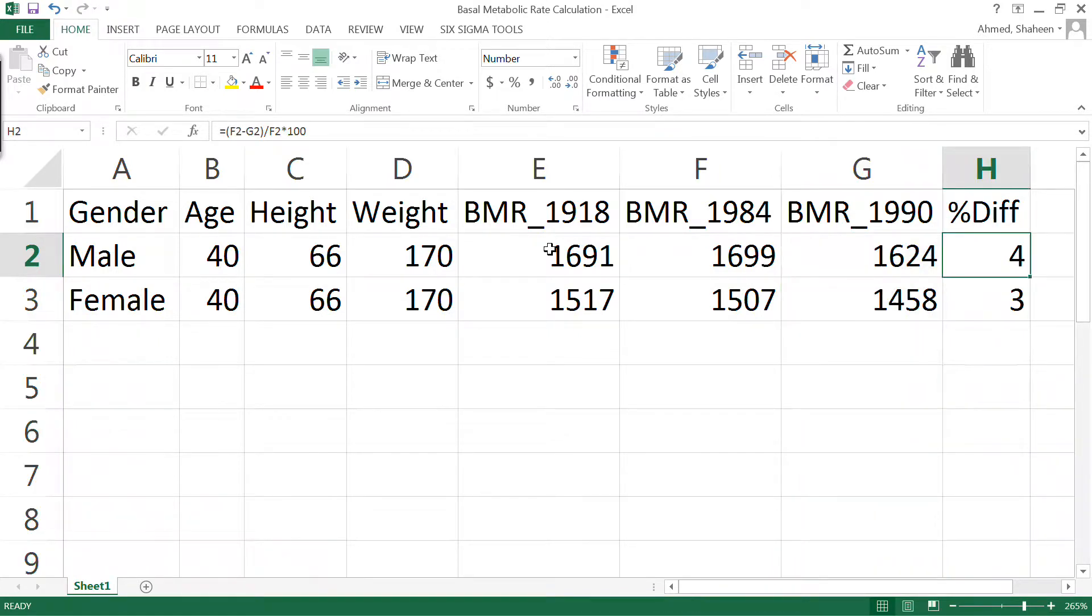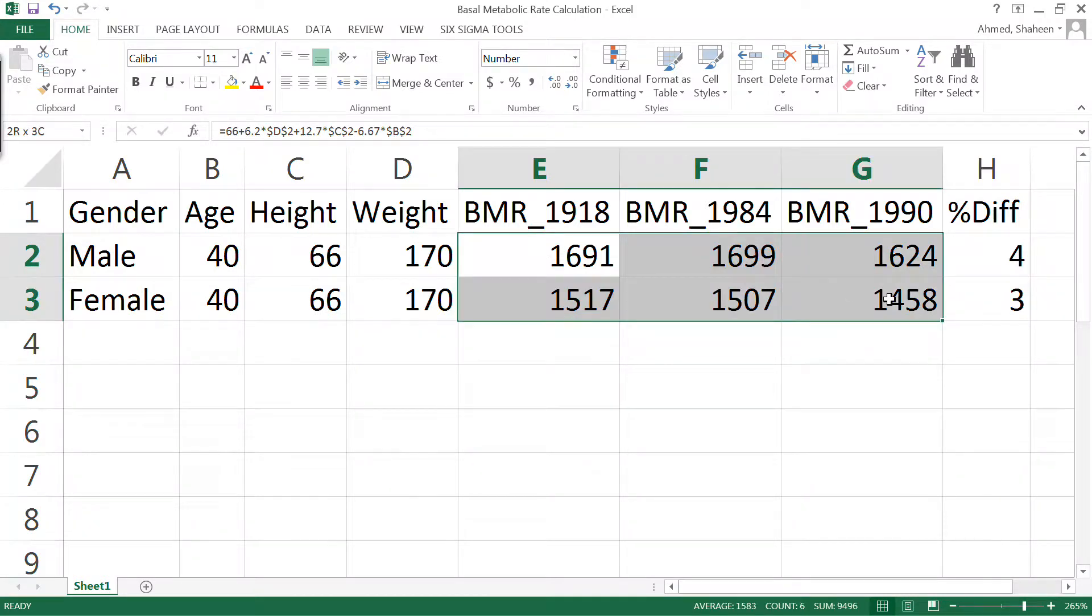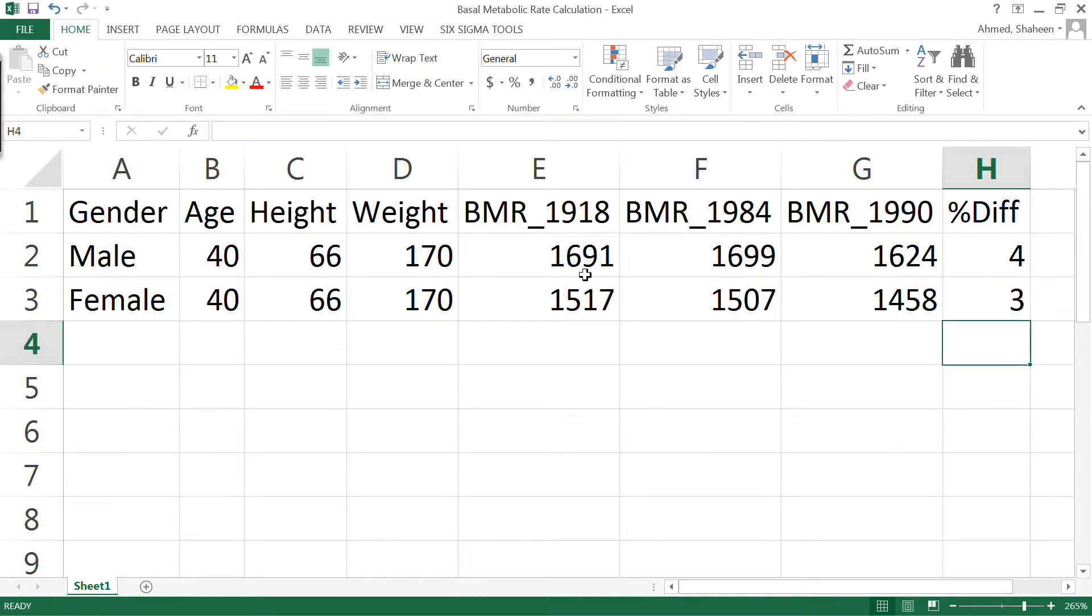However, if you look at the difference, it's very negligible, so you can use basically any of these formulas to calculate the basal metabolic rate. A lot of textbooks still use this original formula that was developed by Harris and Benedict. So this is basically how you calculate basal metabolic rate.